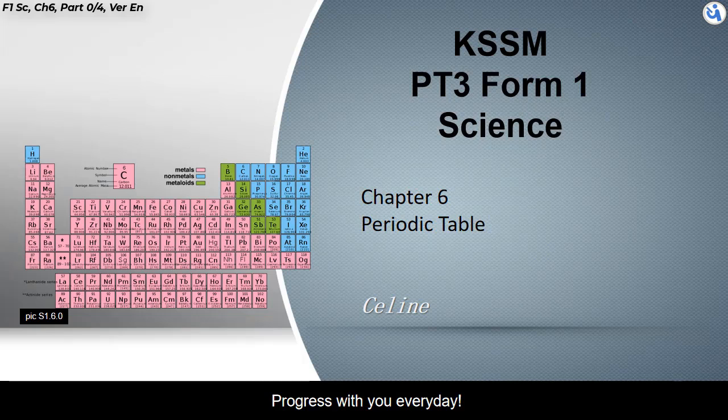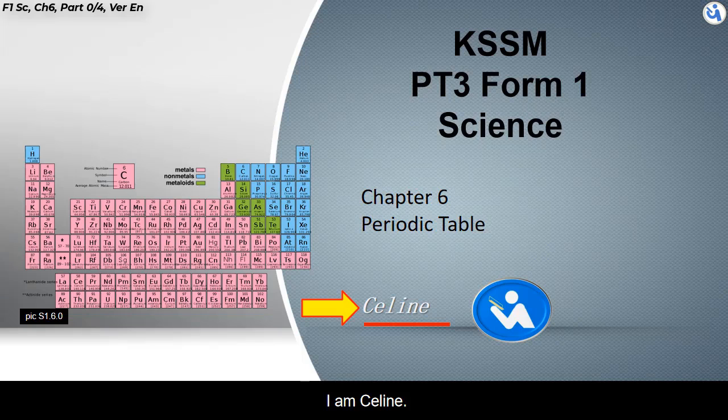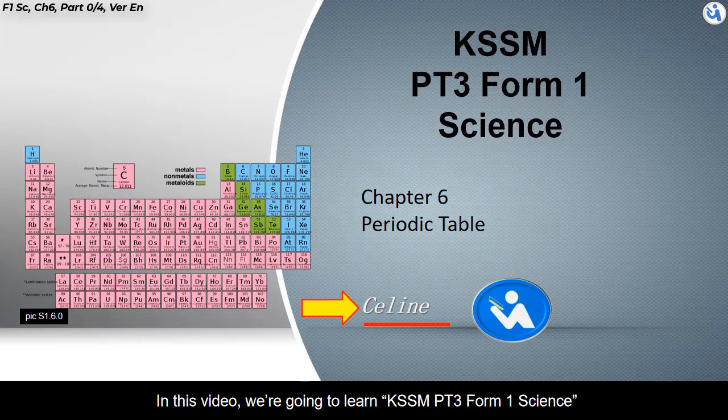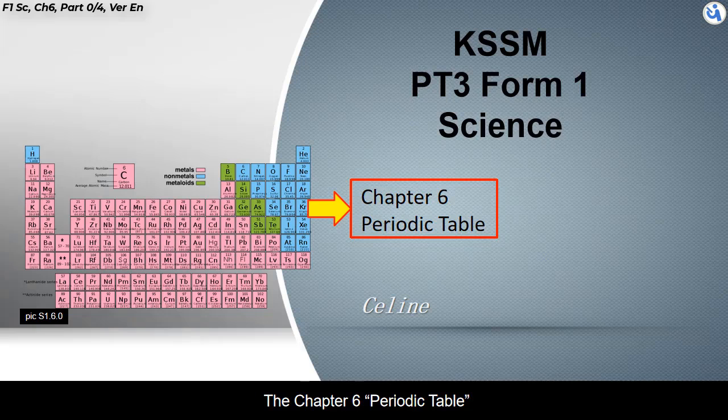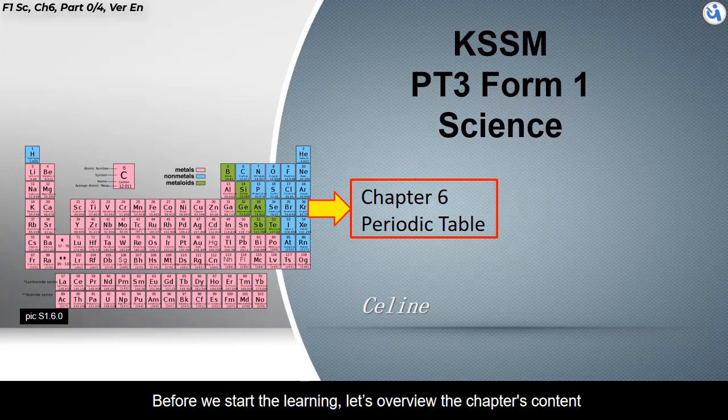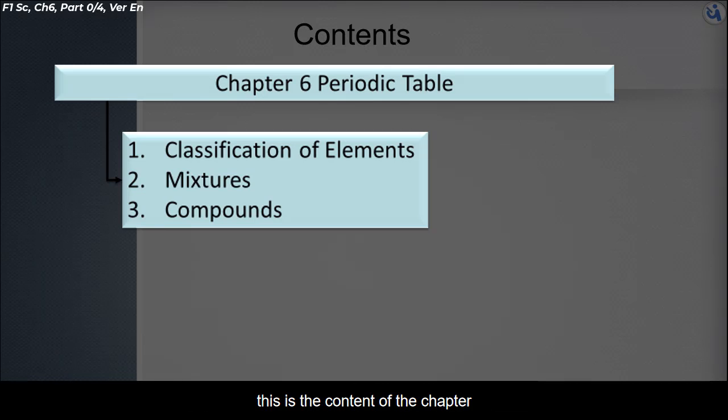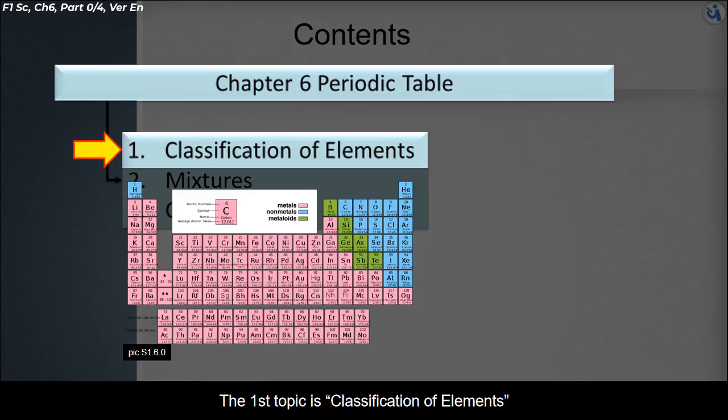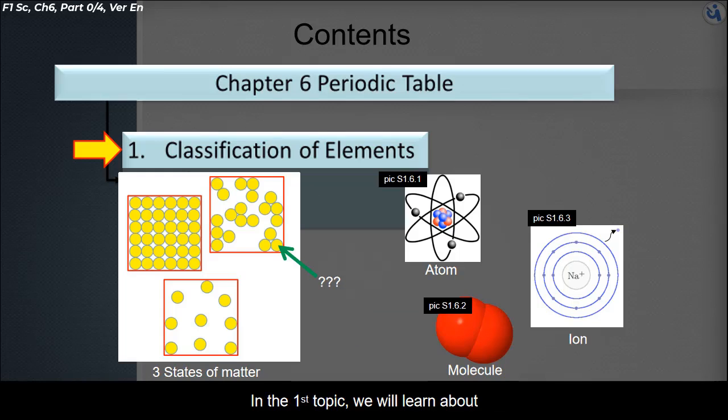Hi everyone, I am Celine. In this video, we are going to learn KSSM PT3 Form 1 Science, Chapter 6: Periodic Table. Before we start the learning, let's overview the chapter's content. This is the content of the chapter. This chapter consists of three topics.